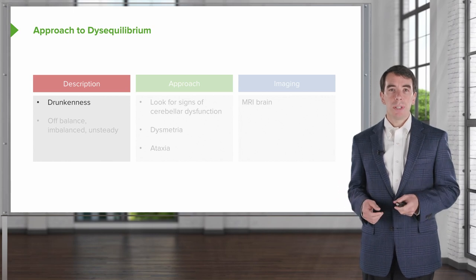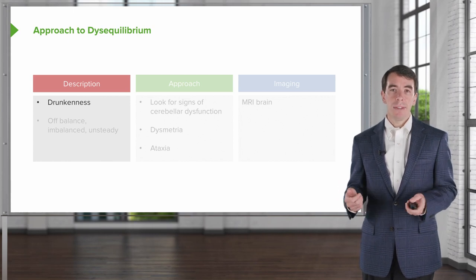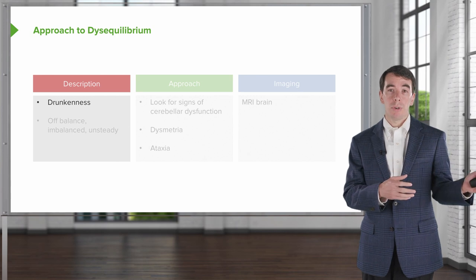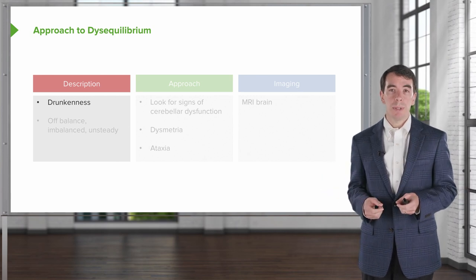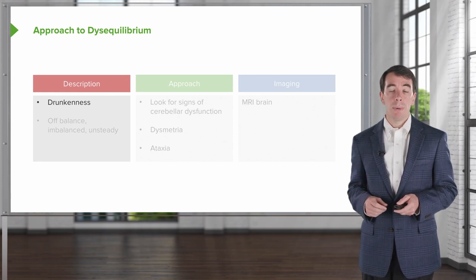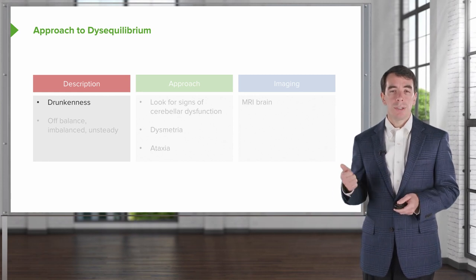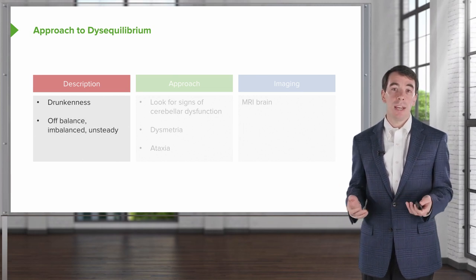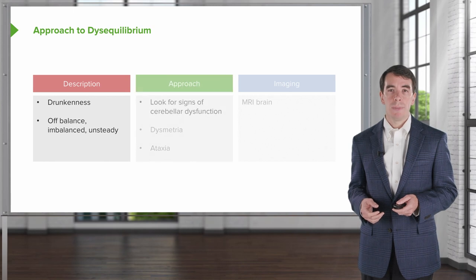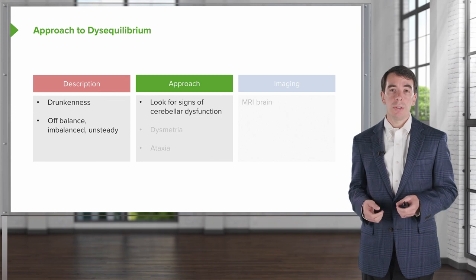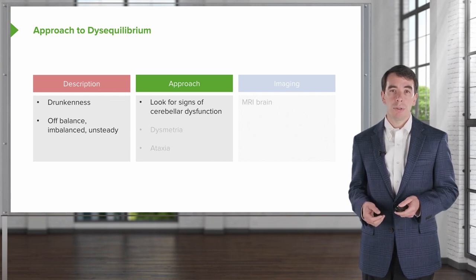As an overview, when evaluating these patients, we start with a description. We want to understand whether the patient is talking about disequilibrium, vertigo, or syncope-presyncope. The descriptions that hone us in on the cerebellum and disequilibrium are sensations of drunkenness, a feeling of off-balance or imbalance, or unsteadiness when walking. When we hear those descriptions, our approach is to look for cerebellar dysfunction on neurologic exam.